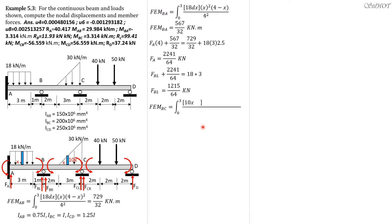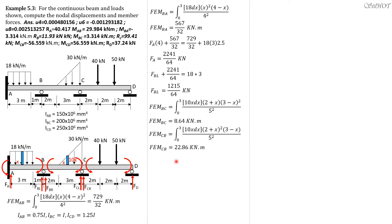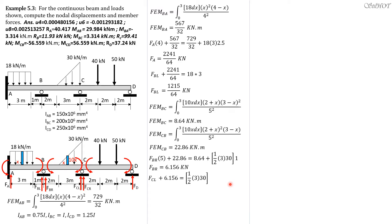For BC's fixed-end moment: fixed-end moment BC is the integral of 10x dx times (2 plus x)(3 minus x) squared divided by L squared (5 squared), from 0 to 3. So fixed-end moment BC equals 8.64 kilonewton meter. Fixed-end moment CB uses the same integral with (2 plus x) squared and (3 minus x) not squared, giving fixed-end moment CB equals 22.86 kilonewton meter. Then summation of moments about C equals 0: FDR times 5 plus 22.86 equals 8.64 plus one-half of 3 times 30 times 1. So FDR equals 6.156 kilonewtons. Then summation of forces Y equals 0: FCL plus 6.156 equals one-half of 3 times 30, so FCL equals 38.844.